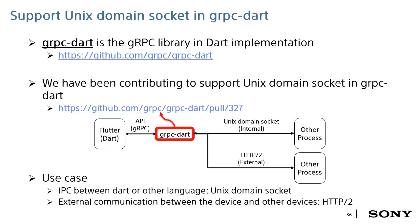gRPC Dart is the gRPC library in Dart implementation, and the owner is also Google. You can easily use gRPC in Dart by using this library. We've been contributing to support UNIX domain socket in gRPC Dart. This pull request uses UNIX domain socket for IPC and gRPC for external process communication. UNIX sockets are lighter and better than TCP/IP sockets when you use IPC.